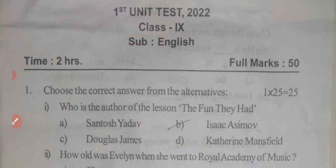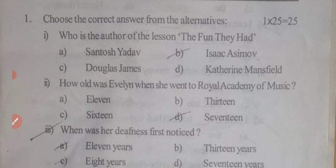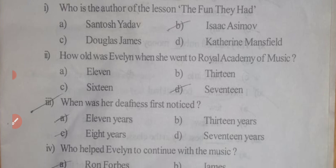First, choose the correct answer from the alternatives. Question one: who is the author of the lesson 'The Funder Head'? The answer is Option B, Isaac Asimov. Next, how old was Evelyn when she went to the Royal Academy of Music? The answer is Option D, 17 years.